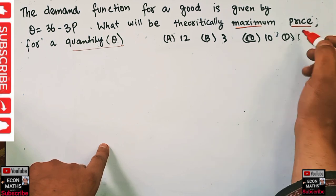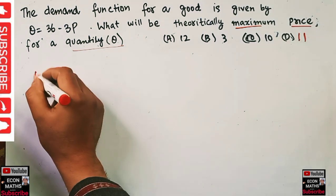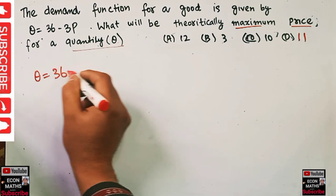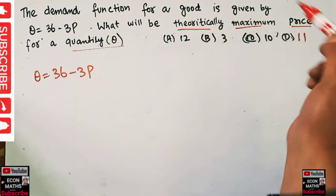Let's say there's another option, 11. Now, what we are being given is Q = 36 - 3P. We have to find out the theoretically maximum price.